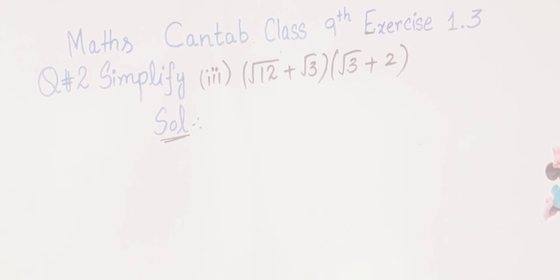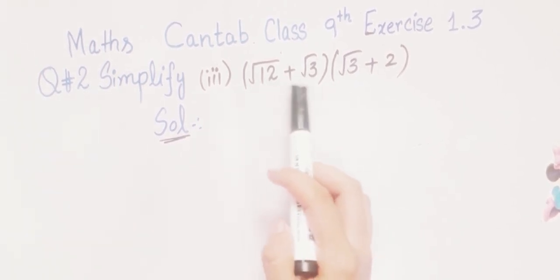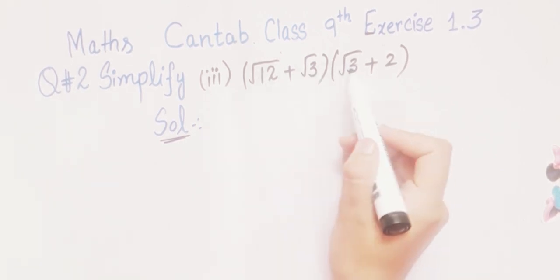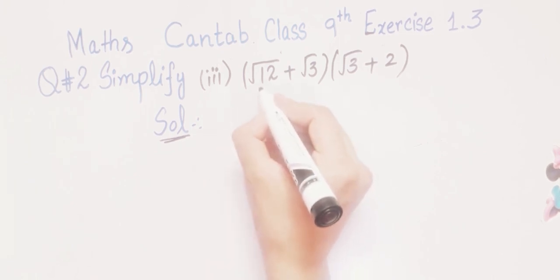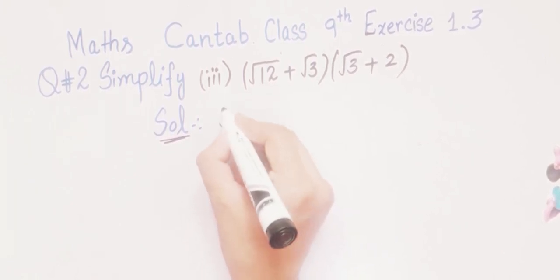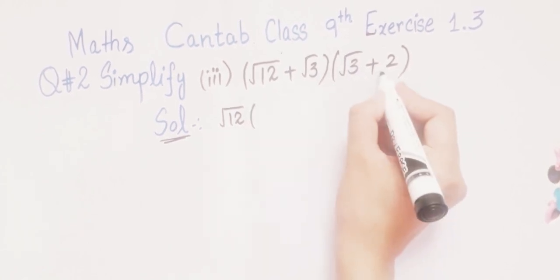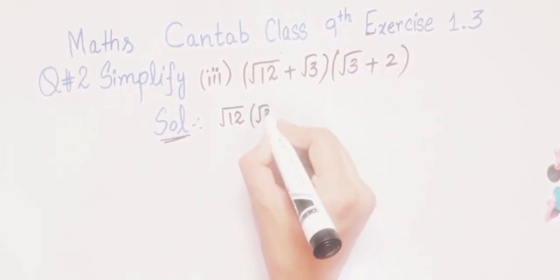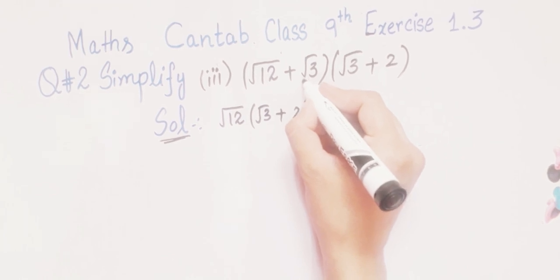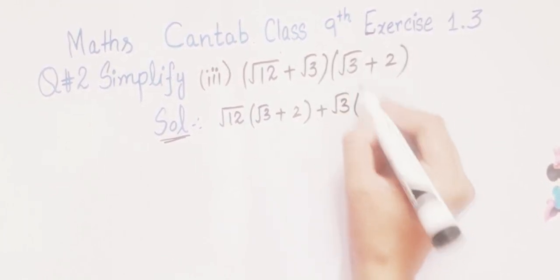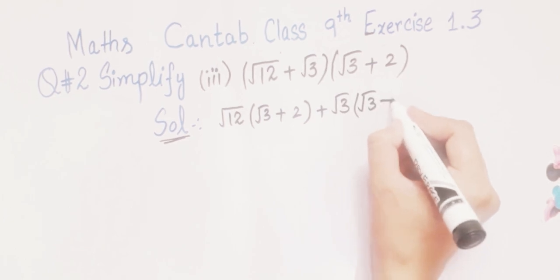Now in the third part we have (√12 + √3)(√3 + 2). We will solve this by expanding — first multiplying √12 into (√3 + 2), then multiplying √3 into (√3 + 2).